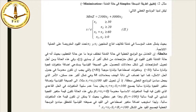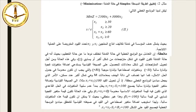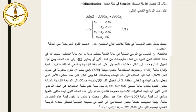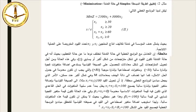مثال تطبيق الطريقة المبسطة (السيمبليكس) في حالة التدني. ليكون لدينا البرنامج الخطي التالي: نُدني Z تساوي 2500X1 زائد 3000X2، بحيث يتمثل هدف المؤسسة في تدنية تكاليف إنتاج المنتجين X1 وX2 تحت القيود المفروضة على العملية الإنتاجية.